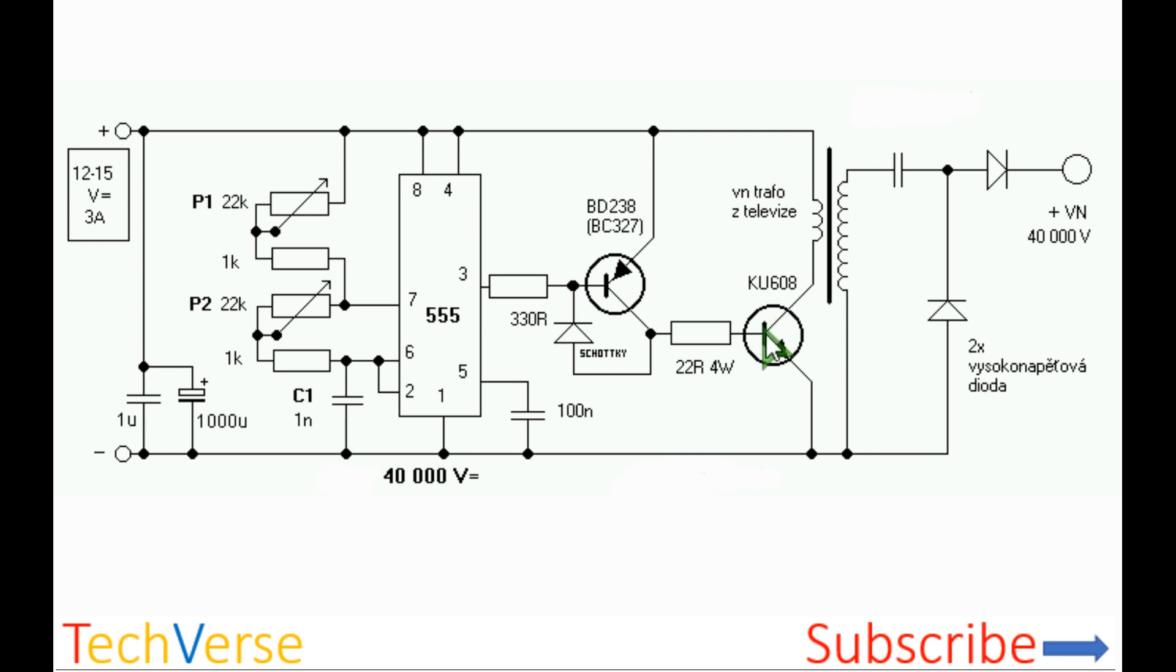You can replace this transistor with the 2N3055 for more power, or you can use the TIP121. Just ensure that the transistor you choose can handle about 5 amperes.